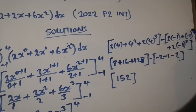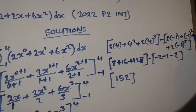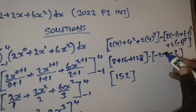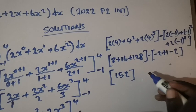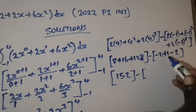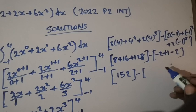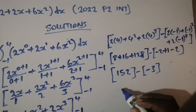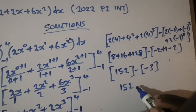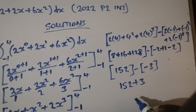For the lower limit, substituting x equals negative 1: 2 times negative 1 is negative 2, then negative 1 to the power 2 is positive 1, then 2 times negative 1 to the power 3 is negative 2. So negative 2 plus 1 plus negative 2 equals negative 3. The final answer is 152 minus negative 3, which equals 155.